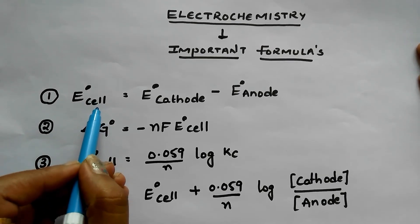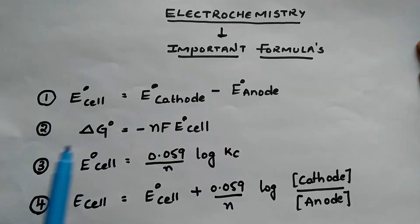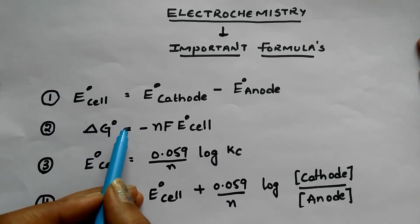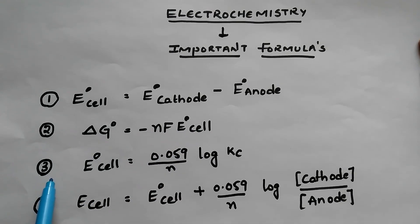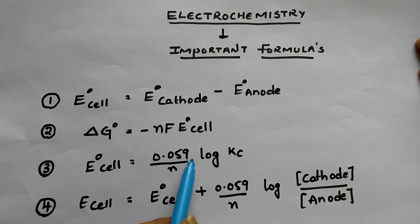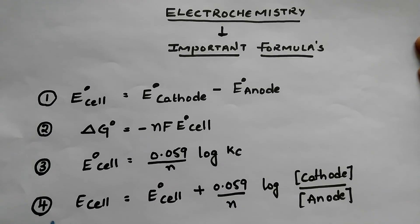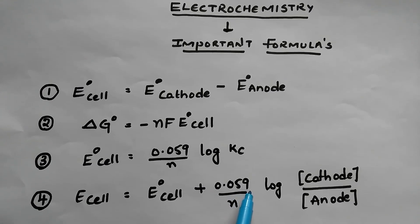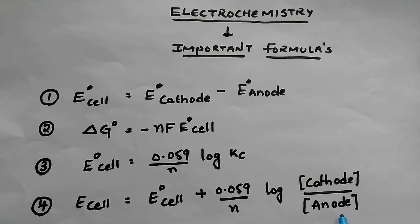The first formula: E° cell is equal to E° cathode minus E° anode. Second formula: ΔG° is equal to minus NF times E° cell. Third formula: E° cell is equal to 0.059 divided by N, times log Kc. Fourth formula: E cell is equal to E° cell plus 0.059 divided by N, times log of cathode concentration by anode concentration.